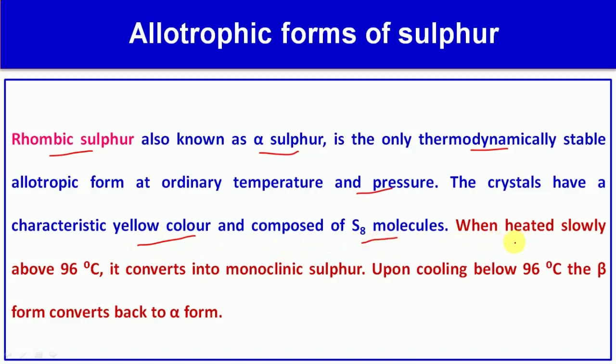When heated slowly above 96°C, rhombic sulfur converts into monoclinic sulfur. Upon cooling below 96°C, the beta form converts back to the alpha form.